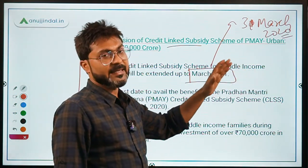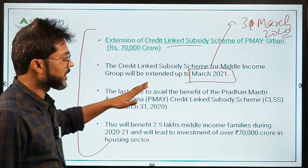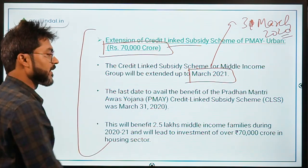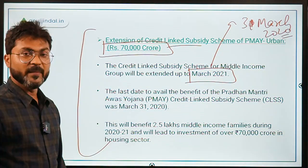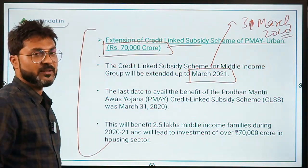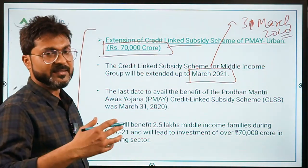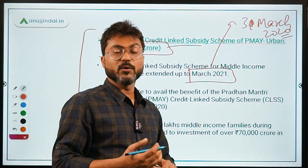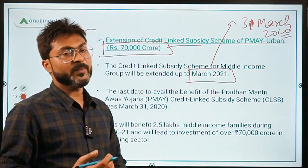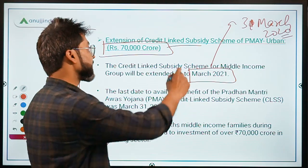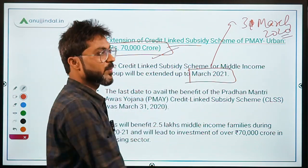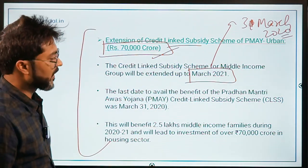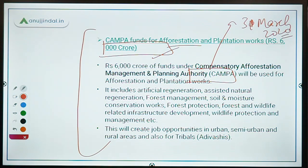For the Credit Linked Subsidy Scheme extension under PMAY Urban, ₹70,000 crore was provided. The scheme provides subsidies on house purchases for EWS, Low Income Group, and Middle Income Group families.